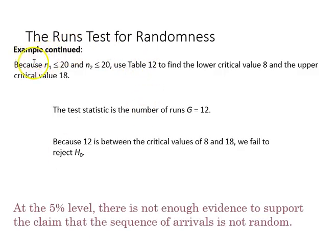Continuing our example, based on N1 being less than or equal to 20, and N2 also being less than or equal to 20, we're going to use table 12 to find the lower critical value 8, and the upper value 18.